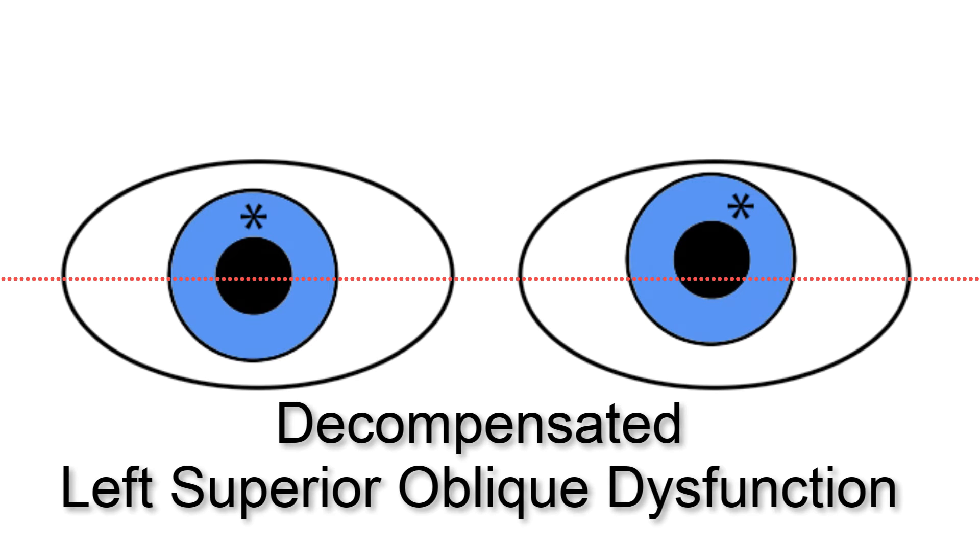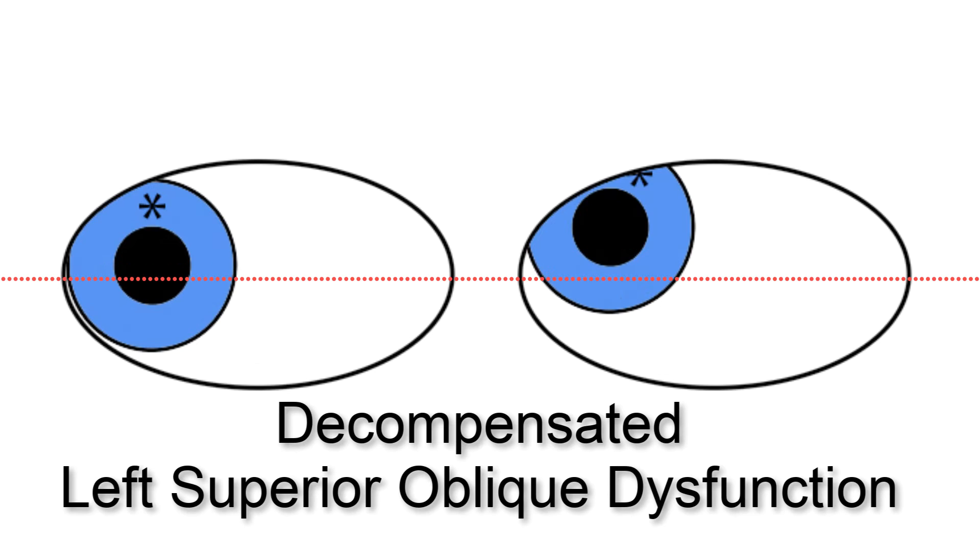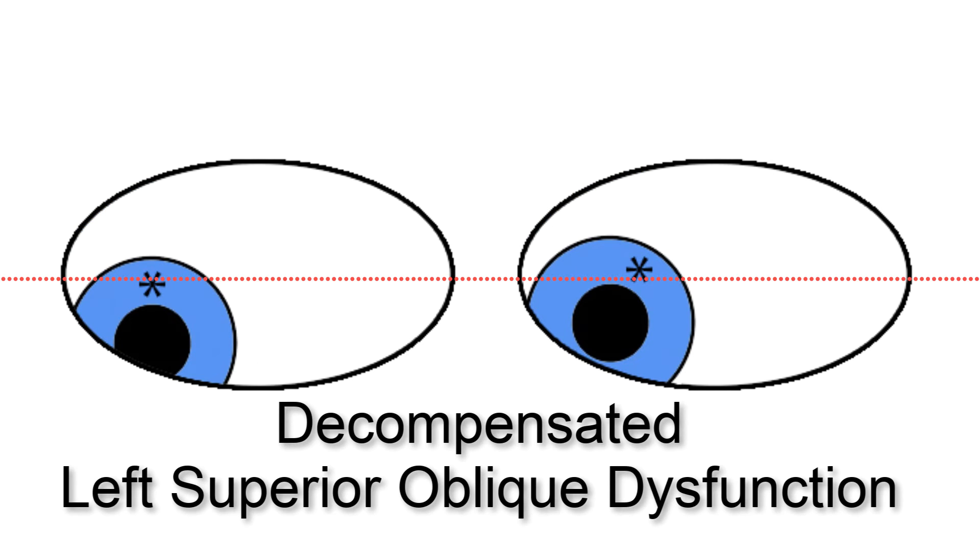The misalignment created by this type of superior oblique muscle dysfunction has a unique feature that differentiates it from acquired fourth nerve palsies. The misalignment is always at least as great in up gaze as it is in down gaze. Here's an example.